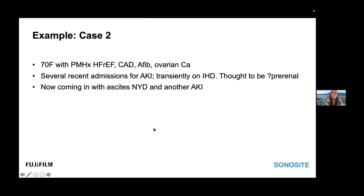Moving on to case number two. This was a 70-year-old woman with known heart failure, coronary disease, AFib, and ovarian cancer thought to be in remission, who'd recently had several admissions for acute kidney injury — including one where she was transiently on hemodialysis, thought to have been a pre-renal insult progressing into ATN. She came in again with new ascites of unclear etiology and another acute kidney injury. She was a really difficult clinical volume status challenge, and everyone was very hesitant to diurese this woman given that she'd just had these AKIs, including one severe enough to land her on dialysis. She sort of got handed off between staff over a weekend — someone would try a little bit of diuresis, then she'd get fluid again. It was really unclear from traditional physical exam parameters what was going on with her volume status and what was causing her AKI.